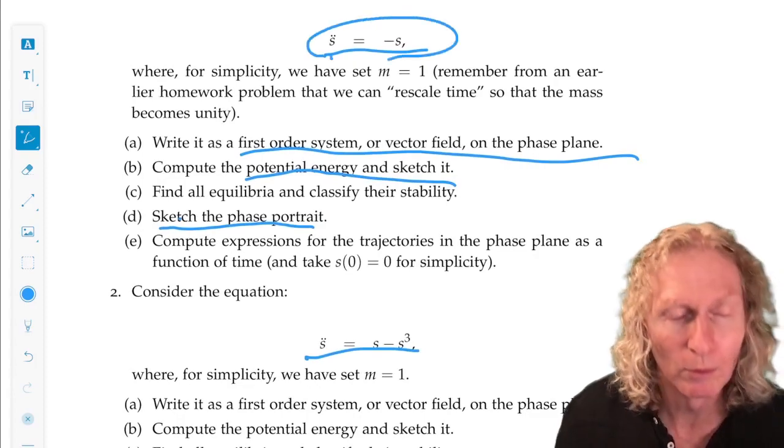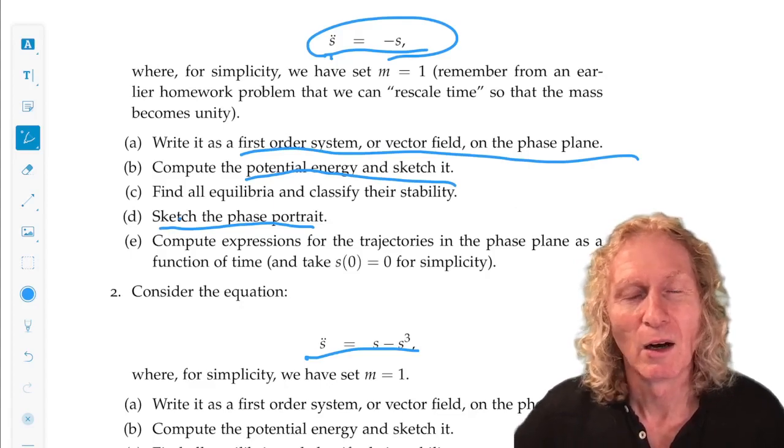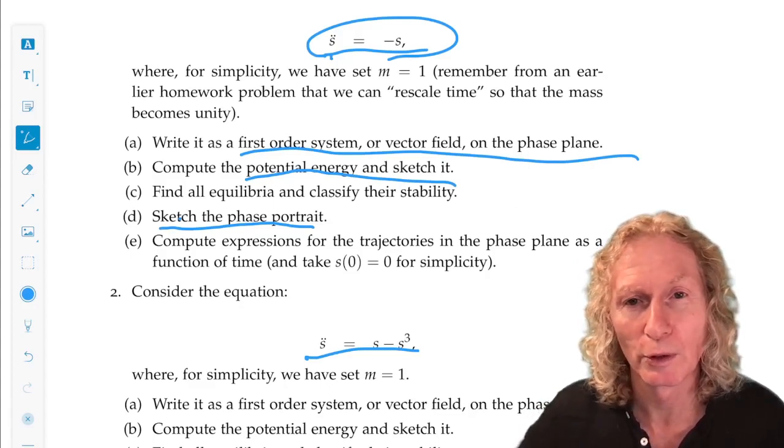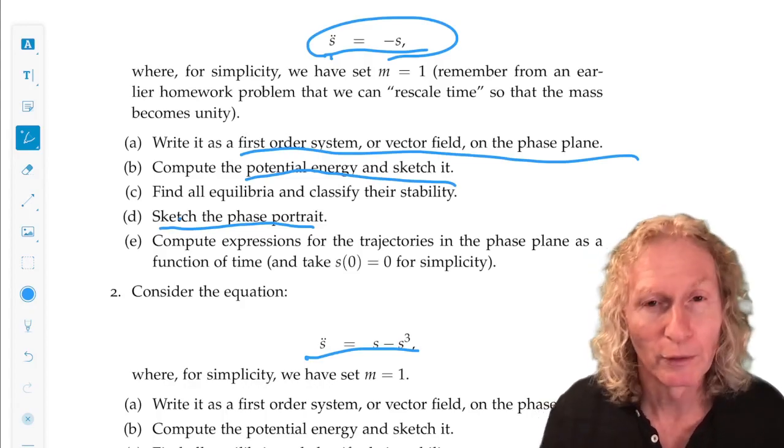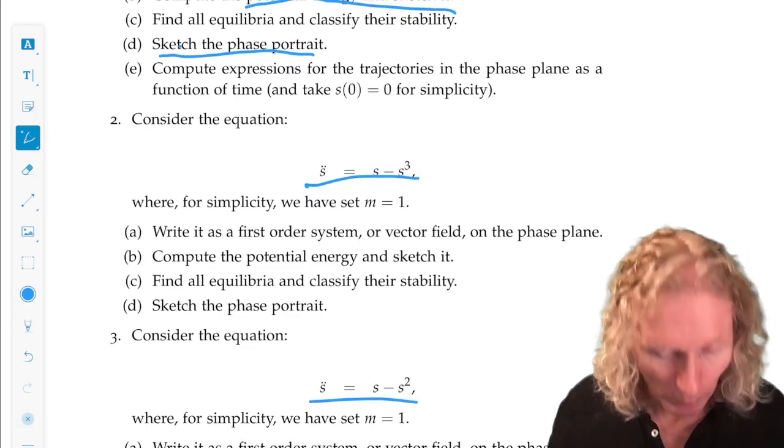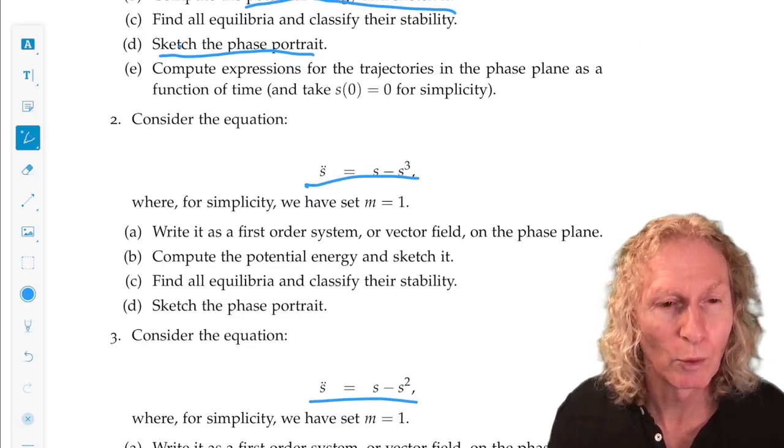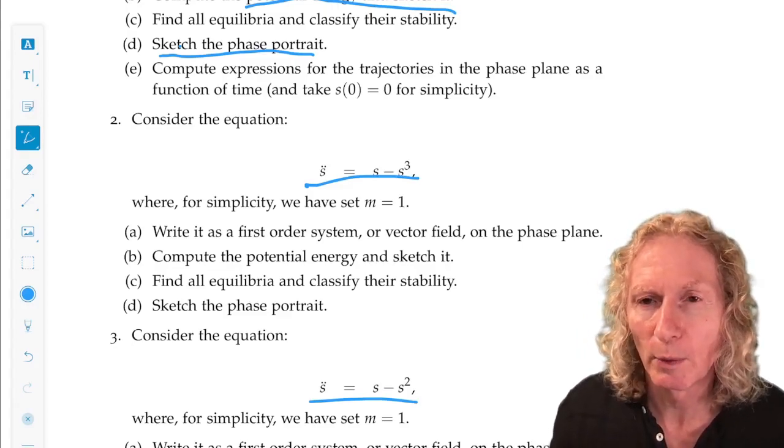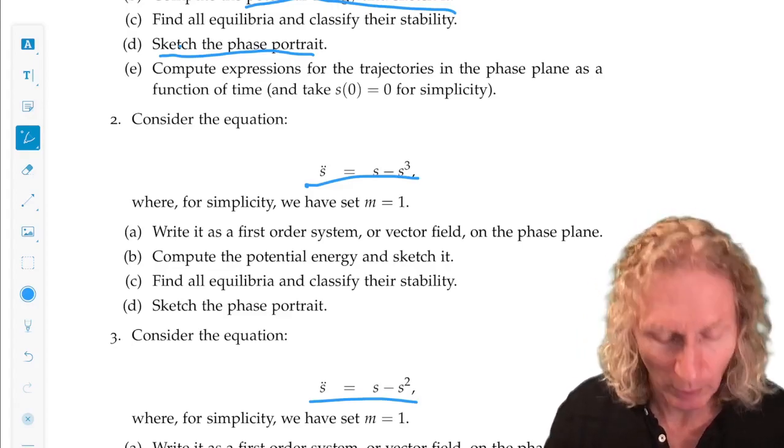For the first one, for example, for the first example equation, all the trajectories, this is a big hint, are closed curves, periodic orbits, because you don't have any separatrices. That's not the case for problem two and three. So qualitatively distinct would be the different families that are separated by the separatrices.